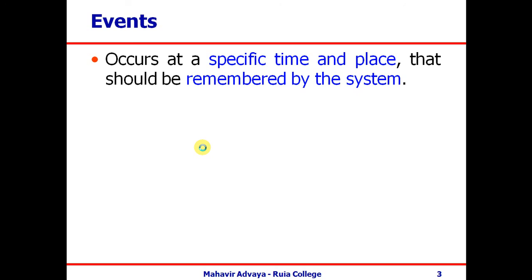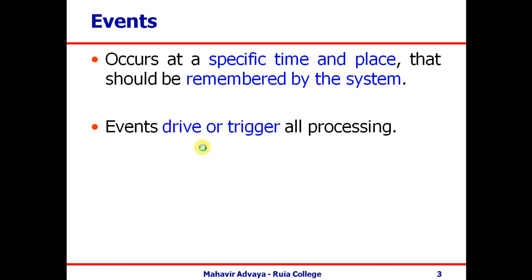Taking an example of a student management system: a student comes for inquiry, fills the admission form, takes admission, or appears for an exam — these are different events. We need to decide which events affect the system or need to be remembered by it. An event is one that directly affects the system and triggers some processing.